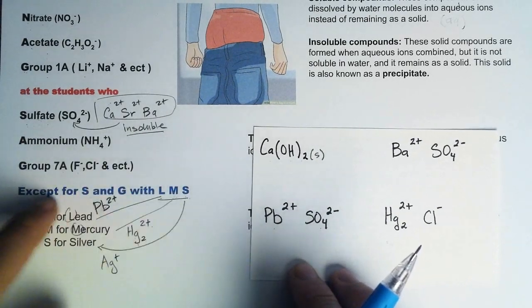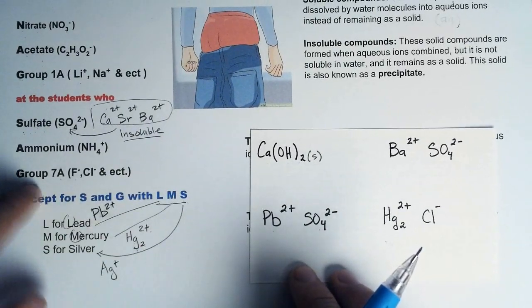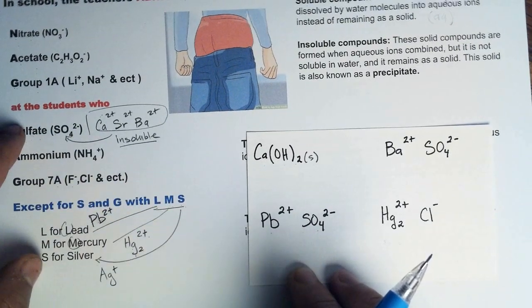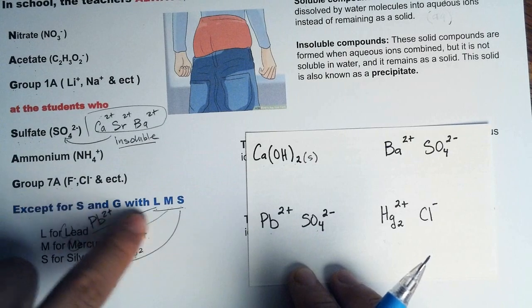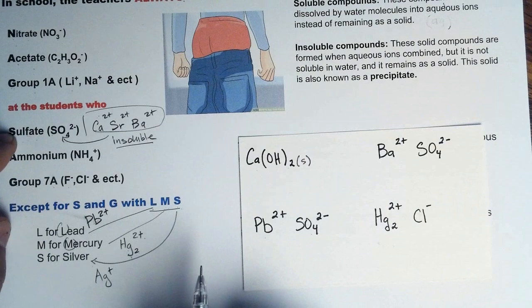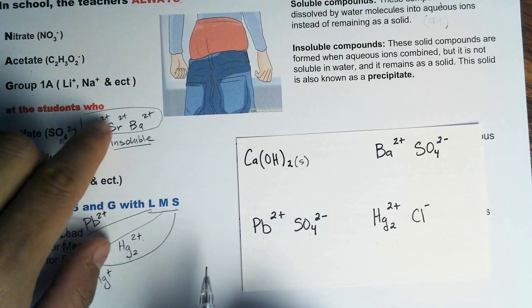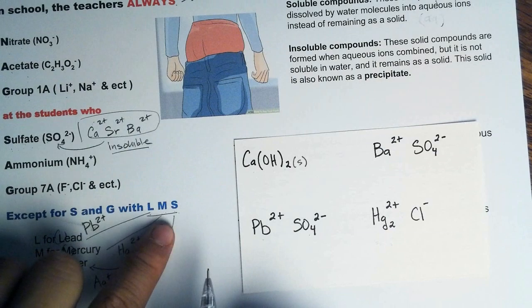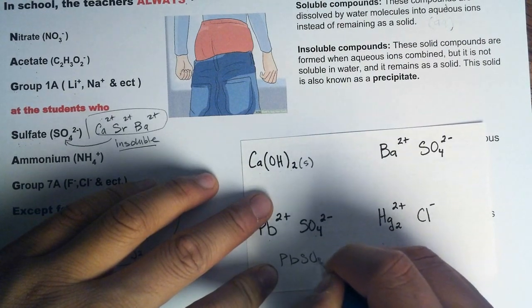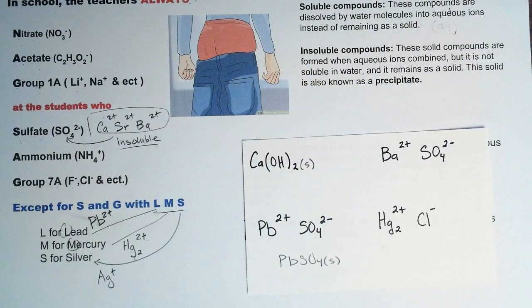How about lead sulfate? We have sulfate — and for sulfate, with the exception of S and G with LMS, so therefore it is going to become a solid. Sulfate is always soluble except with calcium, strontium, barium, and with LMS. So in this case, lead combined with sulfate forms a solid — PbSO4 as a solid. This is the precipitate we will see in the solution if we mix them together.